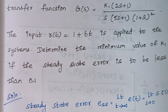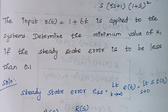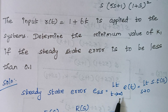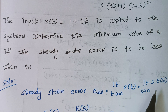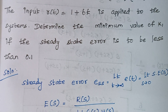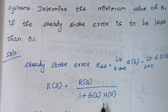The first thing is the formula for steady state error, given by limit t→∞ of e(t). Another form is limit s→0 of s·E(s). The formula for E(s) is R(s) divided by 1 + G(s)·H(s).